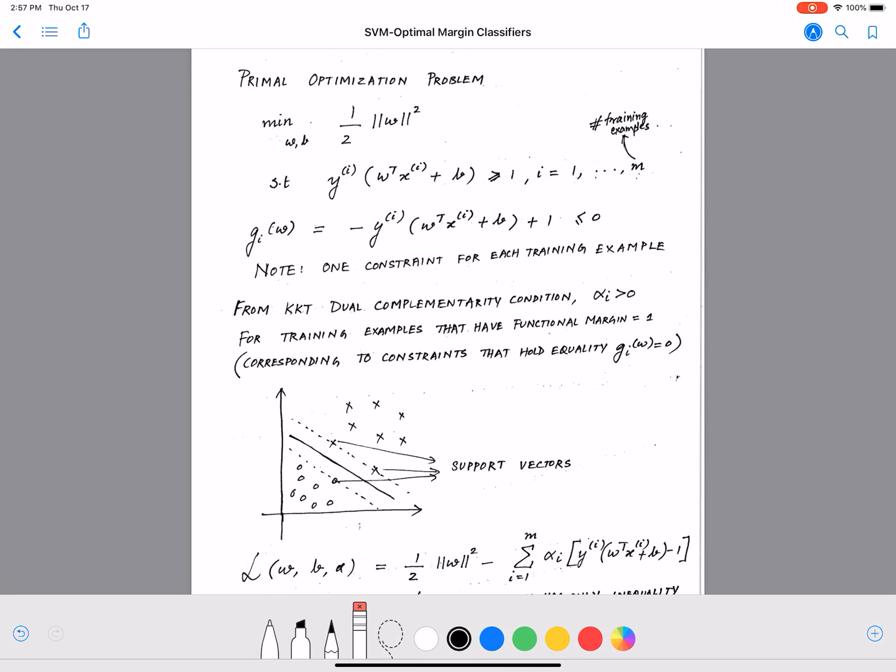So we have an expression for the distance which we finally derived to be this - minimizing w and b over half of ||w||². This is the distance measure that we came up with where ||w||² equals w₁² plus w₂² and so on, as many as the number of features.